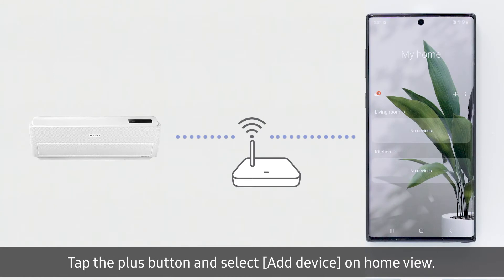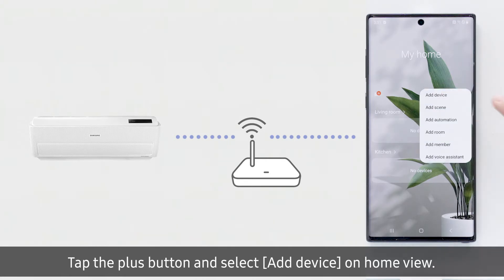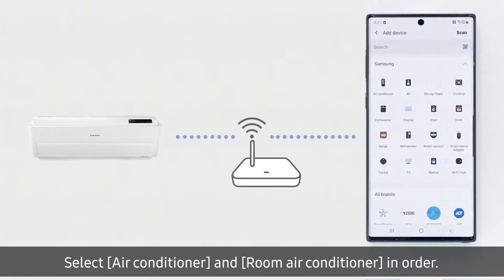Tap the plus button and select add device on the home view. Select air conditioner and room air conditioner in order.